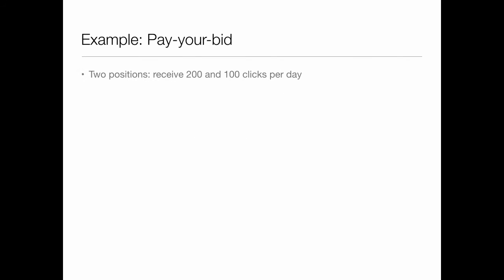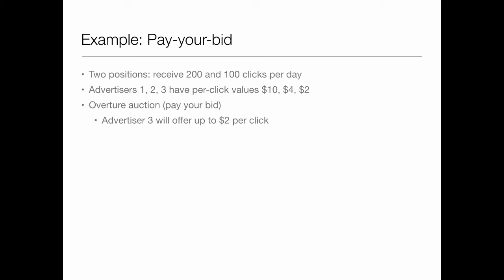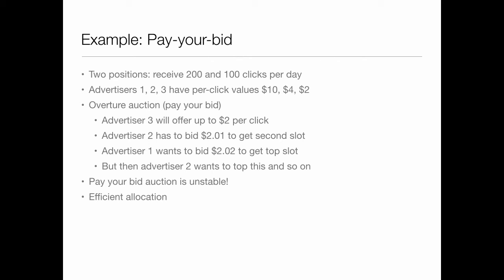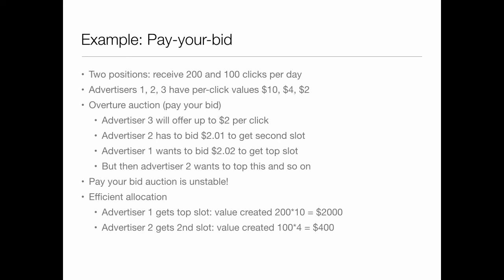Here's an example of pay-your-bid: imagine you've got two positions. The top one gets 200 clicks daily, the second gets 100 clicks daily. Advertisers one, two, and three have per-click values of $10, $4, and $2 respectively. In the Overture auction where you pay your bid, Advertiser three would offer up to $2 per click. Advertiser two just has to bid just above that to get the second slot. Advertiser two then sees they can double their clicks by going to the top spot, so they bid up — and then you get these cycles. The pay-your-bid auction was just unstable. What you want is an efficient allocation where Advertiser one gets the top slot: value created is 200 times $10 = $2,000. Advertiser two gets the second slot, creating $400 in value, for total value creation of $2,400.